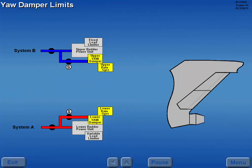The yaw damper rudder authority is limited to 5 degrees either side of the existing rudder position.